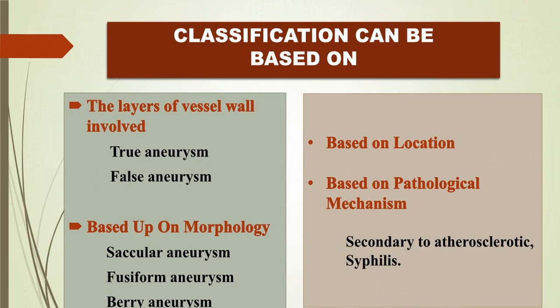Classification of aneurysm depends on many factors. First, we call it a true aneurysm where all three layers of the vessel wall — intima, media, and adventitia — are involved. In a false aneurysm or pseudoaneurysm, it is a collection of blood between the media and adventitia, and that is called a false aneurysm.